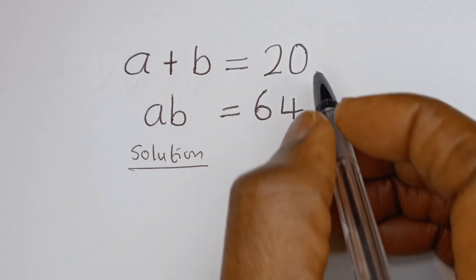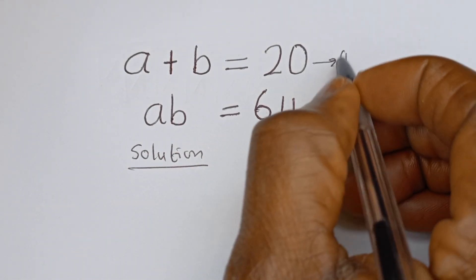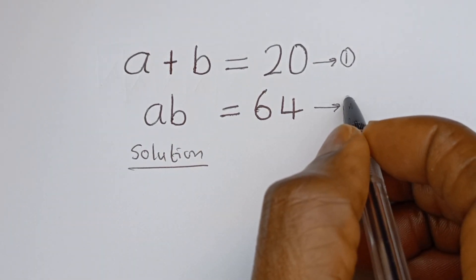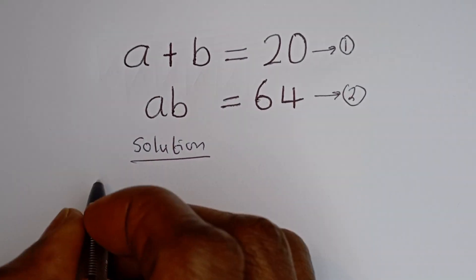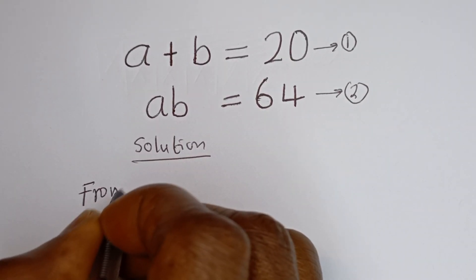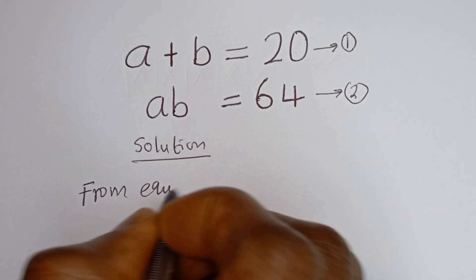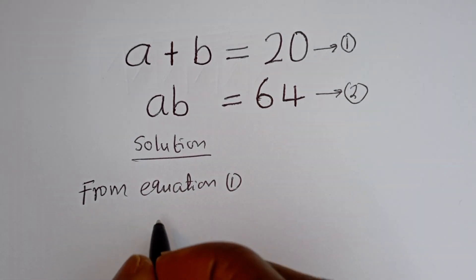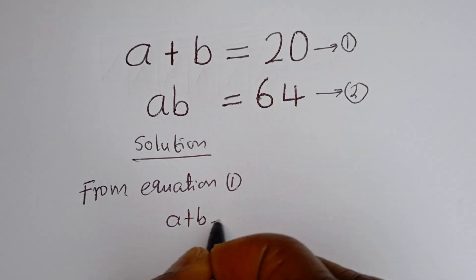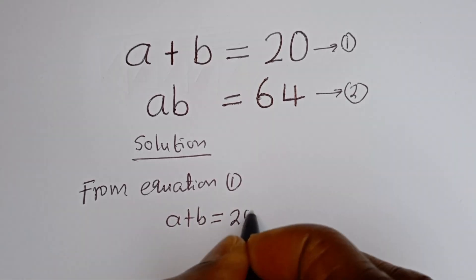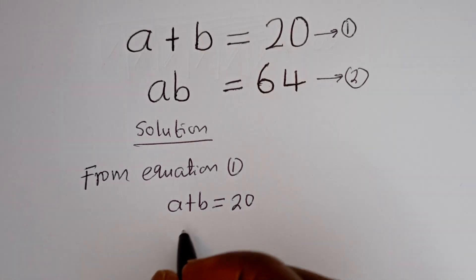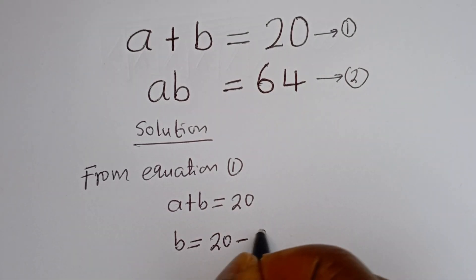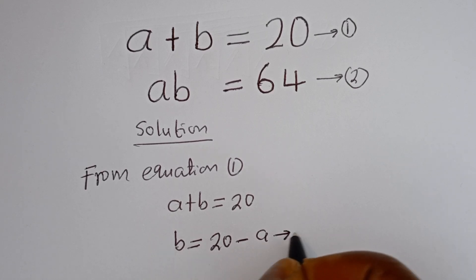a plus b is equal to 20 — let's call this equation 1. ab is equal to 64 — let's call this equation 2. Then from equation 1, we can make b the subject of the formula: b is equal to 20 minus a. Let's call this equation 3.